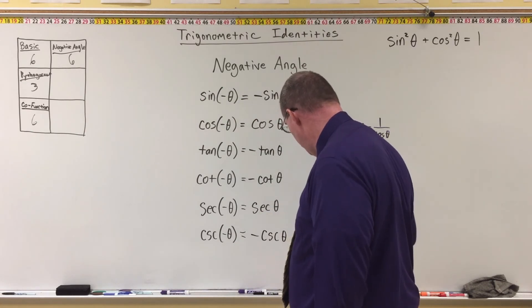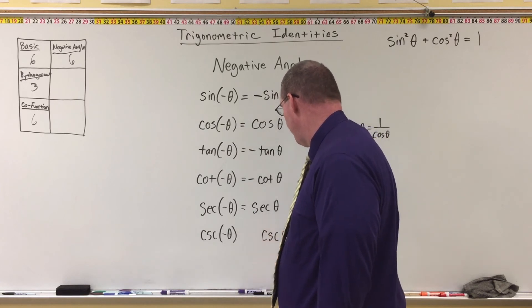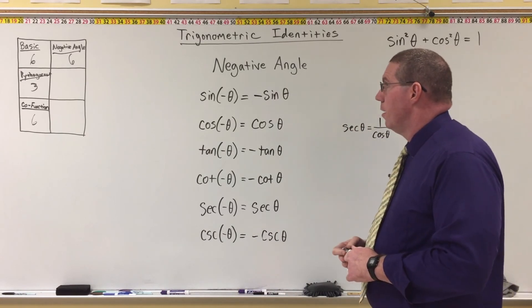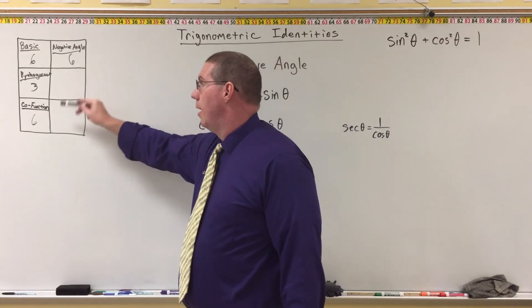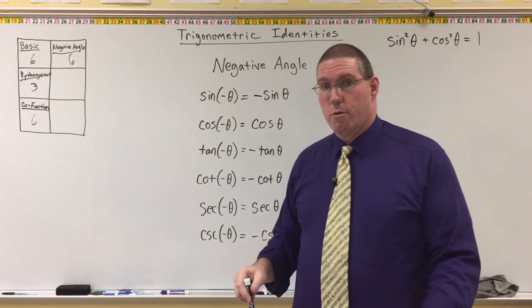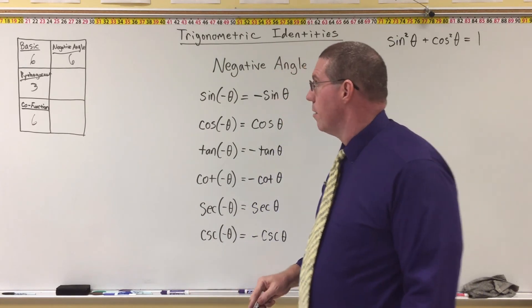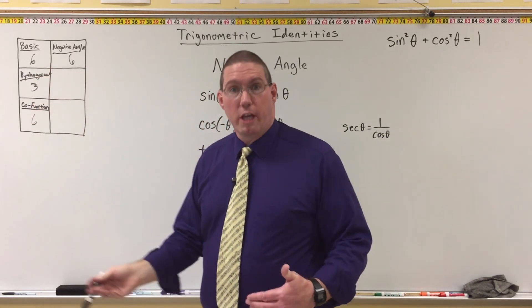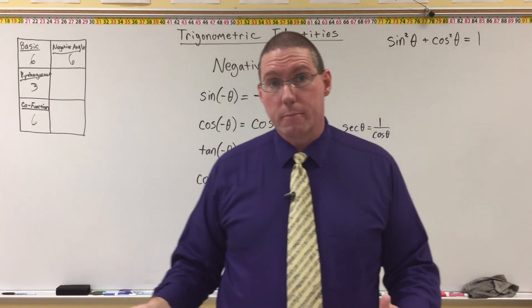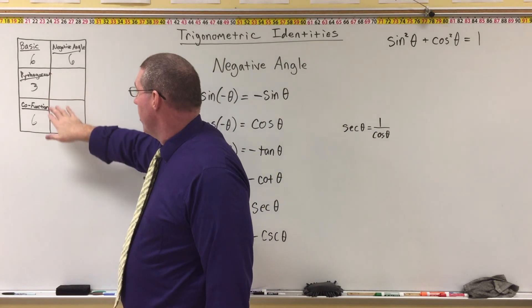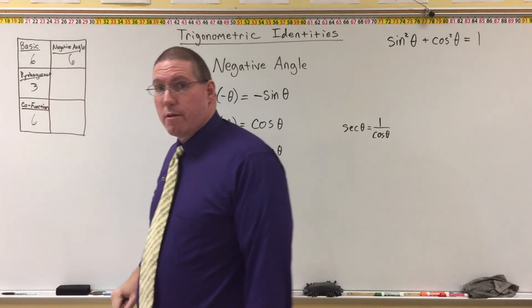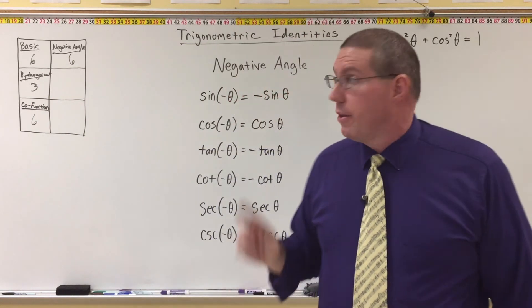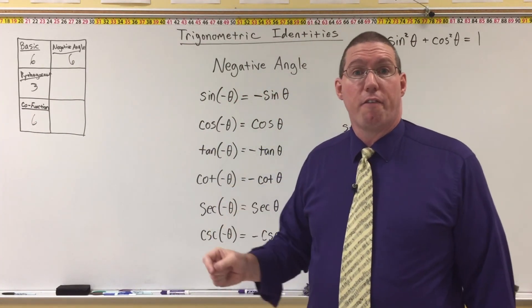These are your six negative angle identities. Now we're going to move on to the last couple of categories, which are a little more complicated. I would go ahead and see if you can write down all six of these without looking, so that they are stuck in your brain. While we go over the next identities, we're actually going to use the previous identities — especially the Pythagorean identities — to help us understand. The next set is called the sum and difference identities.